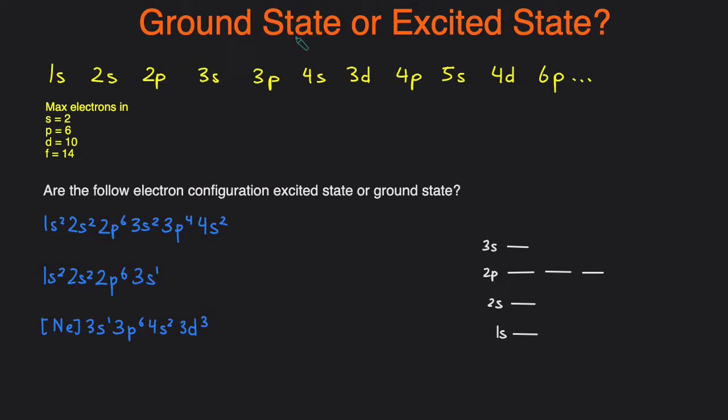Ground state just means that the electrons are in the lowest energy level possible and that you have filled in all the lower energy levels before you fill up the higher energy levels. It's essentially following Aufbau principle.